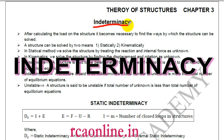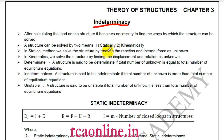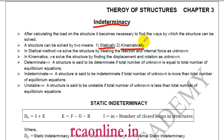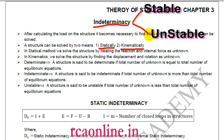Let us start the chapter on indeterminacy. We have two types of indeterminacy: one is static and second is kinematic. In static indeterminacy, the unknowns are forces, and in kinematic indeterminacy, the unknowns are degrees of freedom. One thing to keep in mind is that in indeterminacy, moment is also considered a force.